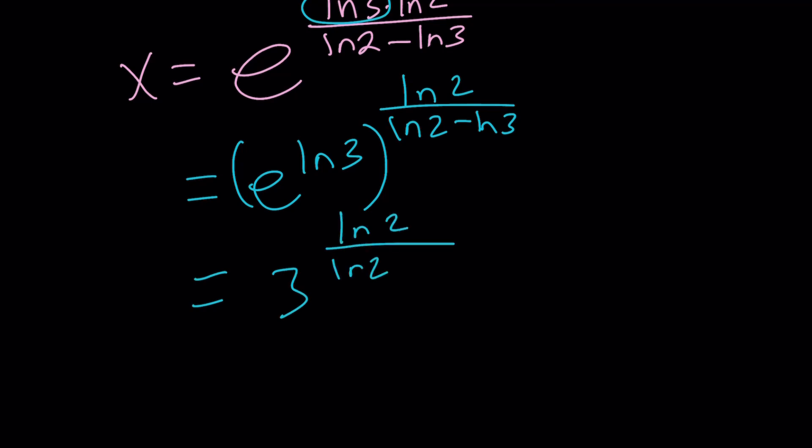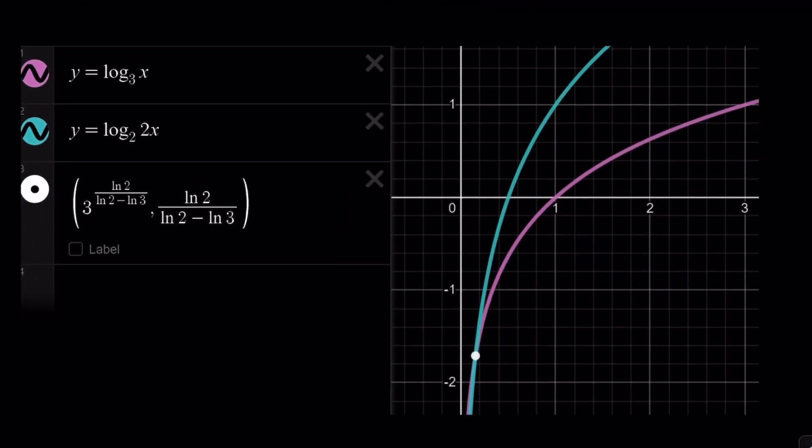That's the x value. Let's take a look at the graph real quick. These two functions are both logarithmic functions, but one of them grows faster. Before they do, they intersect at a single point, which is the x value. This brings us to the end of this video. Thank you for watching, I hope you enjoyed it. Please let me know. Don't forget to comment, like, and subscribe. I'll see you next time with another video. Until then, be safe, take care, and bye-bye.